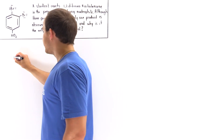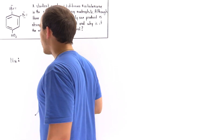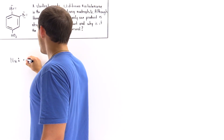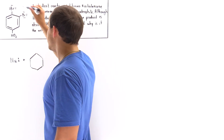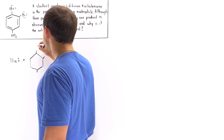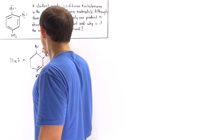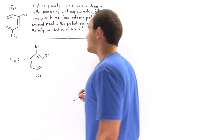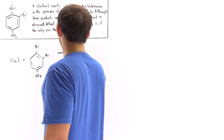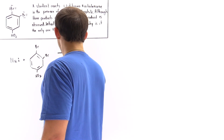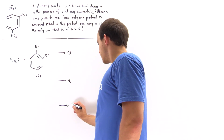We want to ask ourselves: what are the three products that can be formed, why is only one formed, and why? Let's begin by looking at the three potential products that can be formed in this nucleophilic addition of the benzene-containing molecule. Let's designate our nucleophile as NU, with a lone pair of electrons. We mix our strong nucleophile with this 1,2-dibromo-4-nitrobenzene molecule, and we want to identify products 1, 2, and 3.